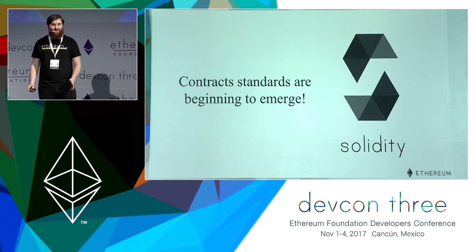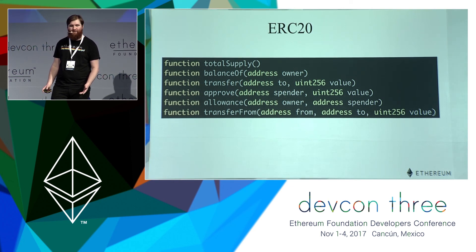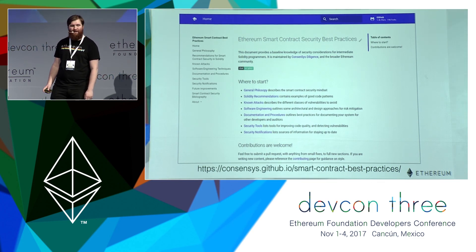Contract standards are beginning to emerge. We have ERC-20, which many of you have heard about — it's a set of standards for having a token on the blockchain that's interoperable with other tokens. There are also smart contract security best practices from a company called ConsenSys, available on their GitHub. I'll publish these slides to Twitter so you can look it up after.